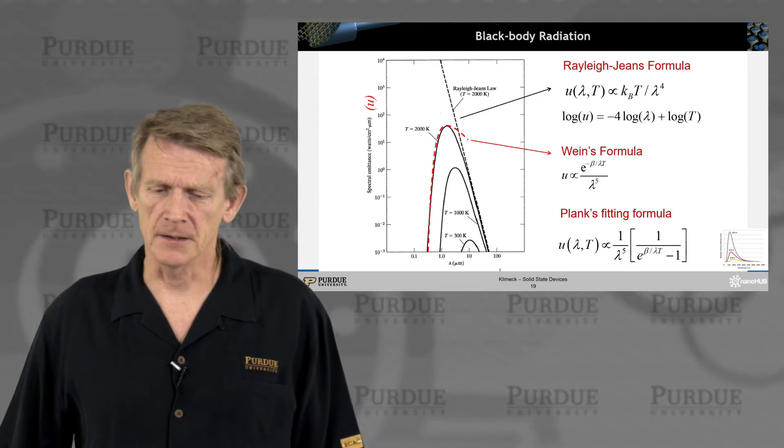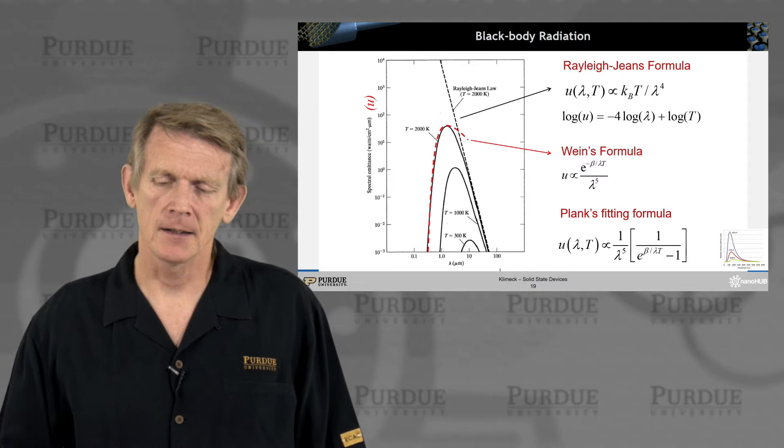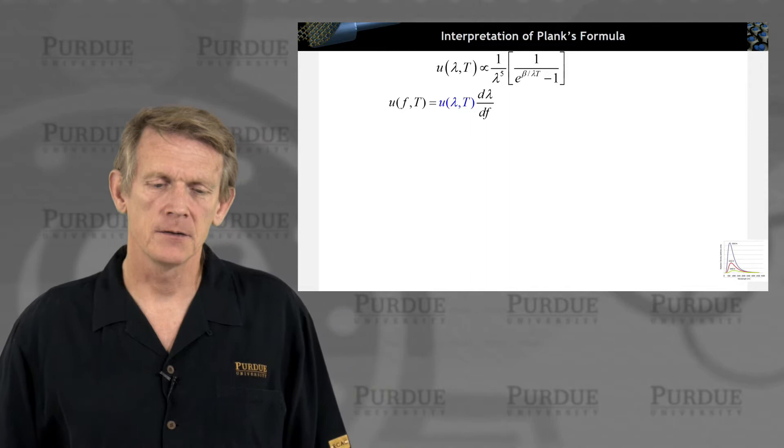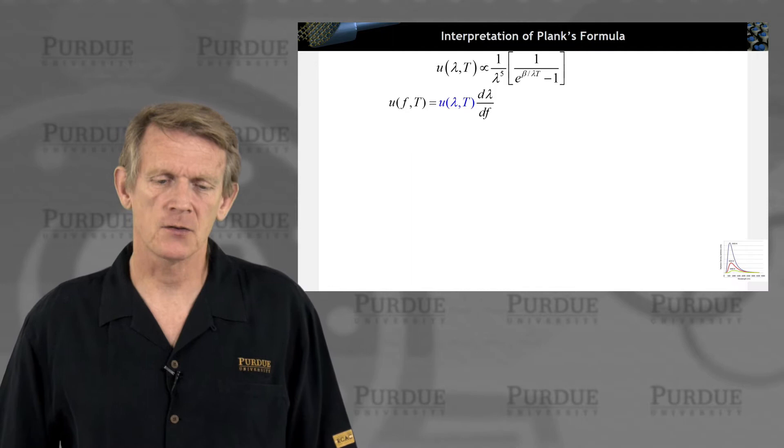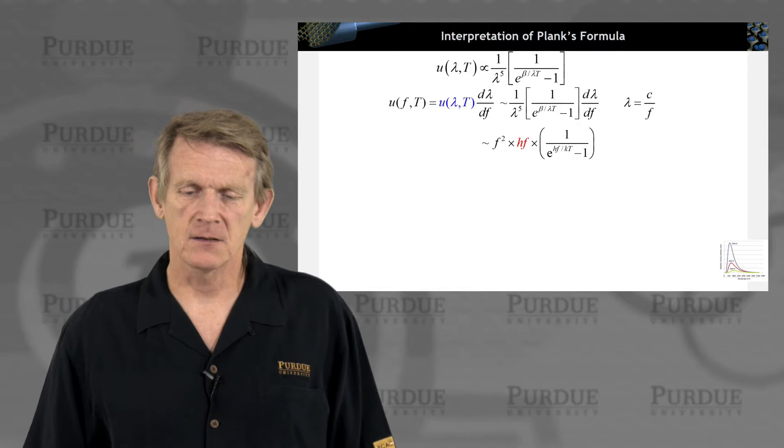Now, Planck came up with a fitting formula like this. And it looks like a pretty complicated thing, but it can basically match these curves, the experimentally observed curves. And let's interpret this formula a little bit in a different way. So the original description was in terms of lambda and temperature. Let's translate that through a differential into frequency and temperature and look at this formula more carefully.